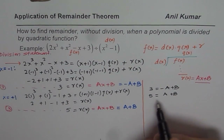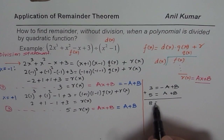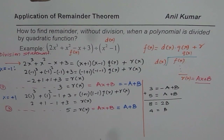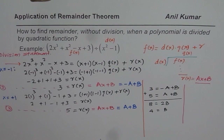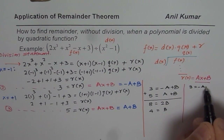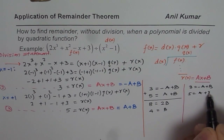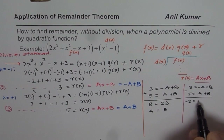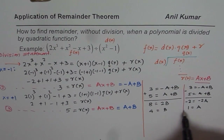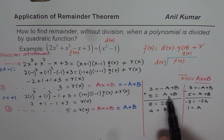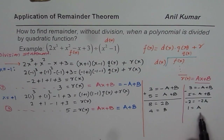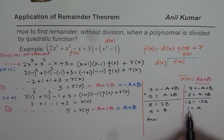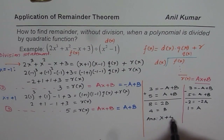To find a and b, we can add the two equations: 3 + 5 = 8 = 2b, so b = 4. If we subtract them: 3 - 5 = -2 = -2a, so a = 1. Therefore, ax + b gives us x + 4 as the remainder.